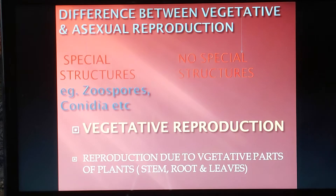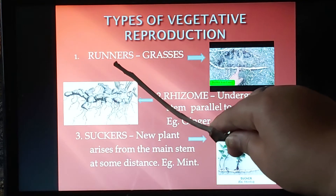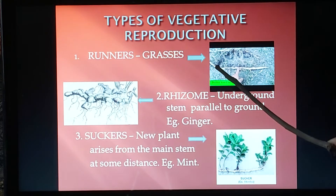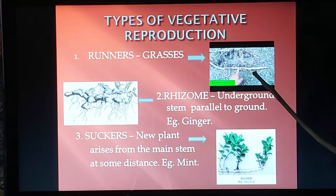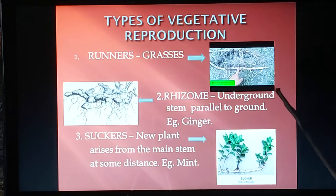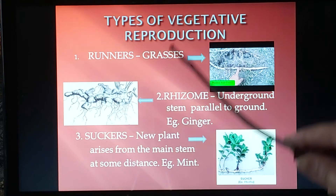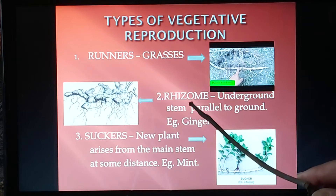Let's discuss the different modes of vegetative propagation among plants. The first is runners. As the name indicates, the plant runs over the surface of the ground, as shown in this picture. A common example is grasses — when you uproot grass you can see it running along the surface of the ground, which is why they are called runners.